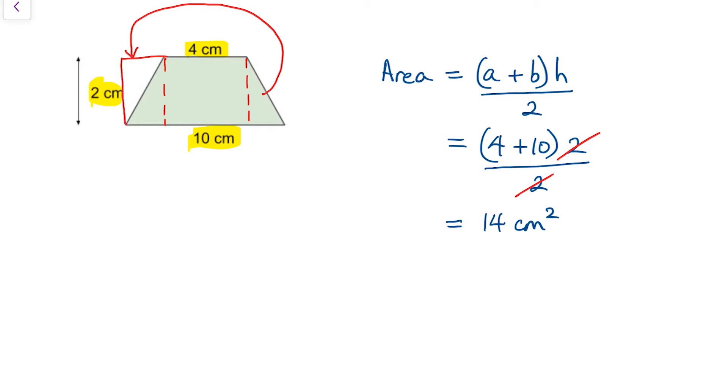I know that this distance here would be 3. That length there is 3, and that length there is 3, because this length here is the same as this one here, which is 4.